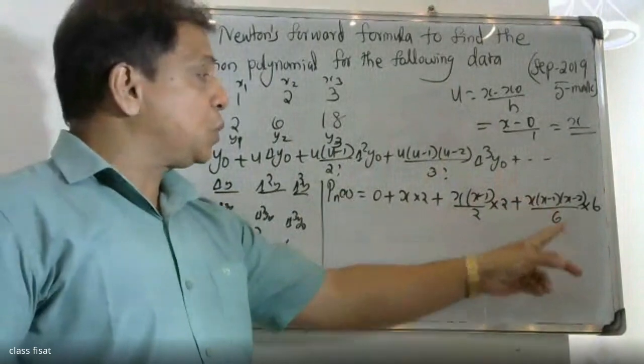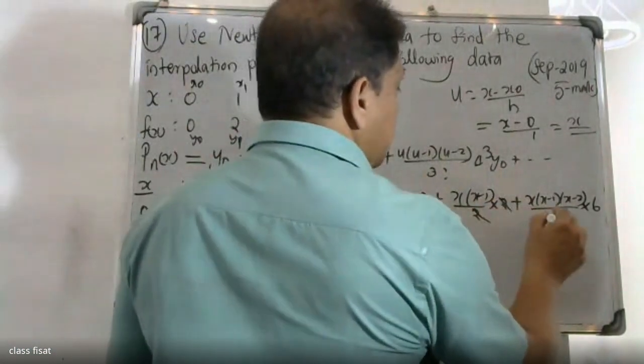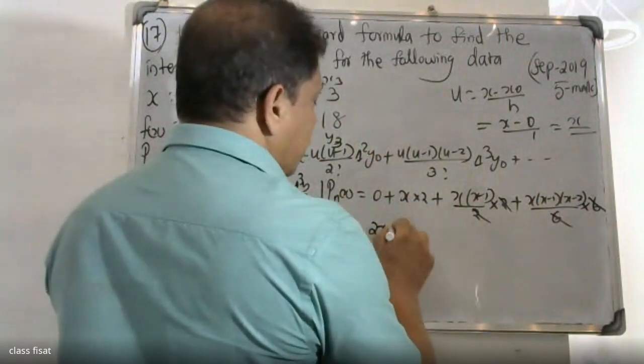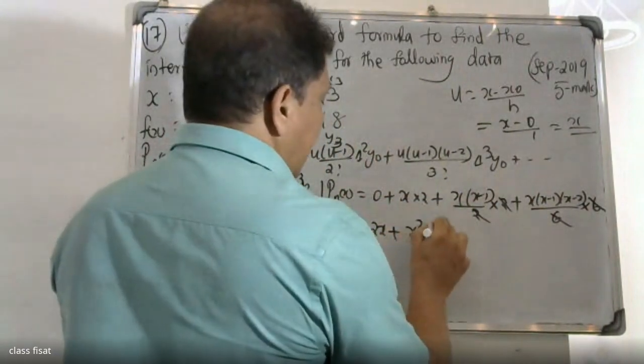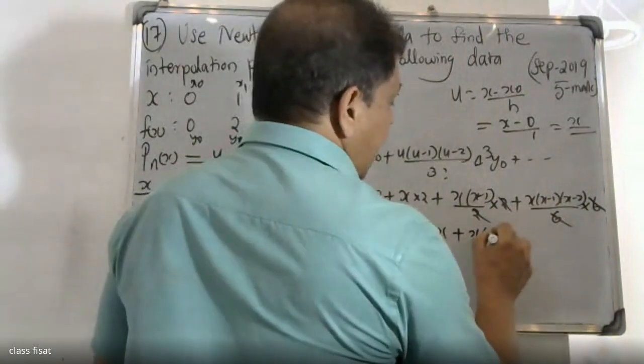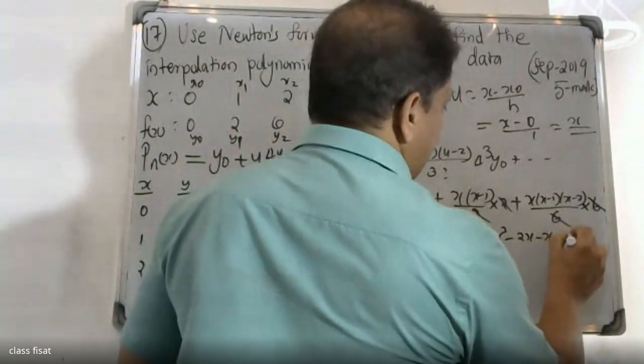X minus 1 X minus 2 divided by three factorial, 6 by 6 into 6. You have to simplify. 6 and 6 cancel. You put x square minus x plus x into x square minus 2x minus x plus 2.